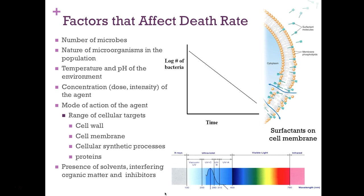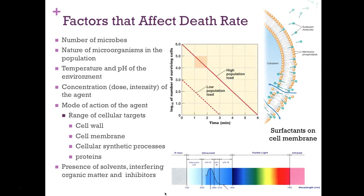Factors affecting death rate include: number of microbes — a higher contamination load takes longer to destroy, as shown on a population chart; nature of microorganisms in the population — the target is usually a mixture of bacteria, fungi, spores, and viruses, not just a single bacterium; and temperature and pH within the environment, which we covered in chapter six.